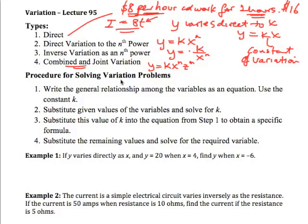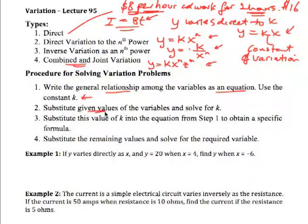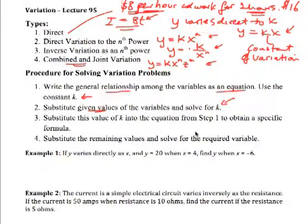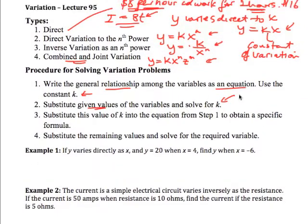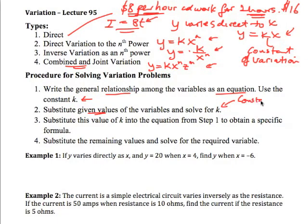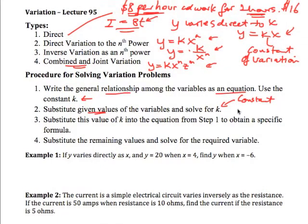Now to solve a variation problem, what we do is we write the general relation among the variables as an equation. And we use the constant k as our constant of variation. We substitute in the given values so that we can actually find what that constant of variation is. Now remember it's a constant, so it's always the same for a particular problem.